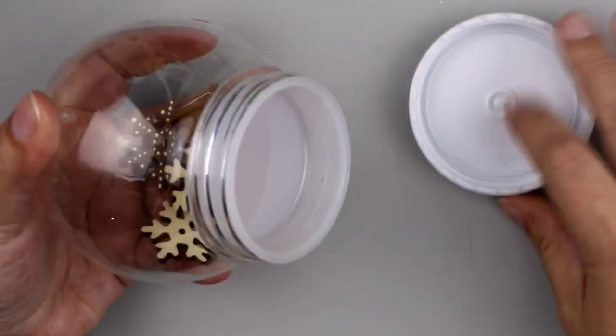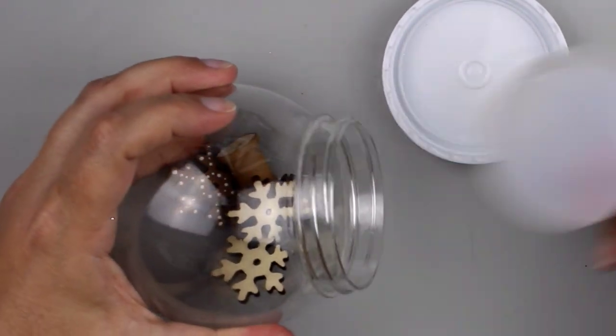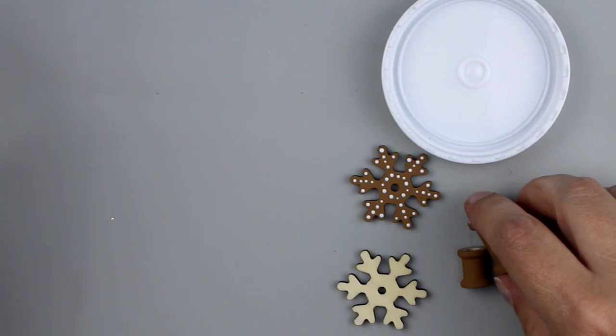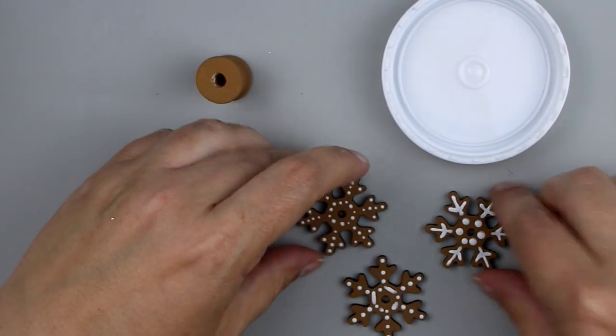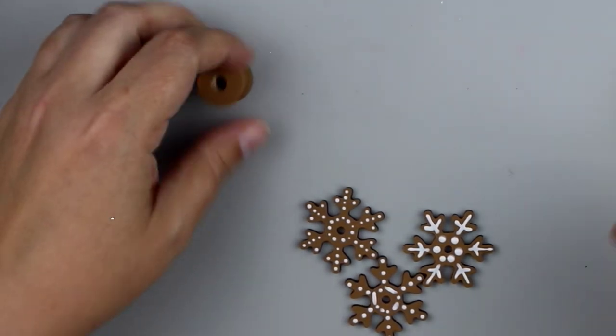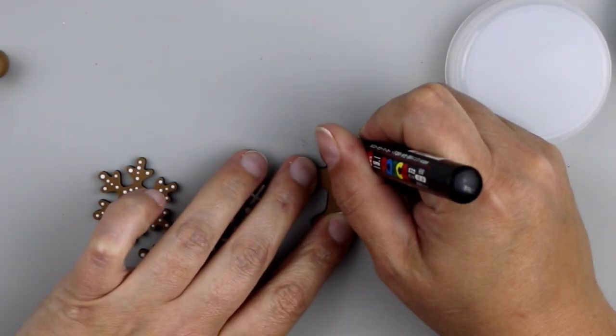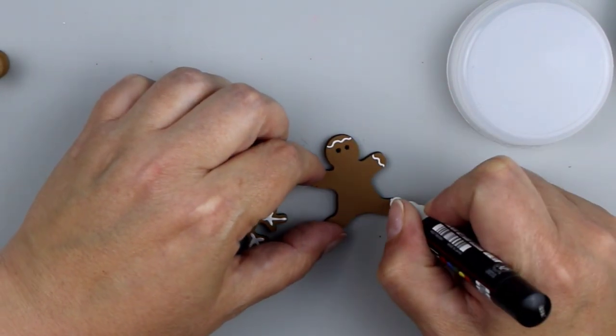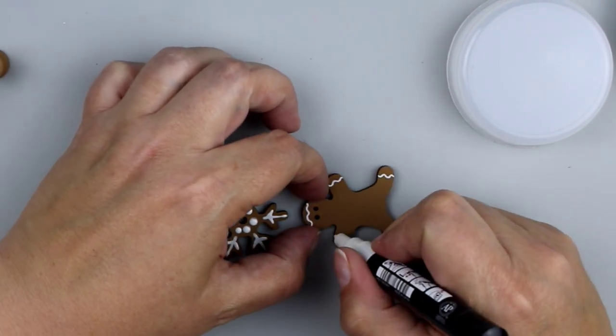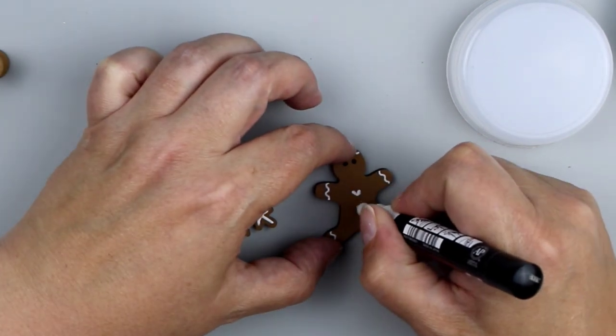So for DIY number two, we're going to use one of these snow globes from the Dollar Tree. They sell these every single year and you can put water and other things in them. However, I'm going to keep mine dry. And I have three of these wood snowflakes from the Dollar Tree. I painted them with the hazelnut color from Waverly. And then I went in with some puff paint to decorate my quote unquote cookies. And then I am using a paint pen here to decorate up a little gingerbread man.